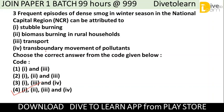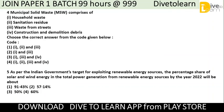Next question: Municipal Solid Waste (MSW) comprises what? Options are: (1) household waste, (2) sanitary residues, (3) waste from streets, (4) construction and demolition debris. We have to choose the correct code from multiple answer options. The correct answer is number 4 — all of the above. Municipal Solid Waste includes household waste, sanitary waste, waste from streets, and construction and demolition debris.